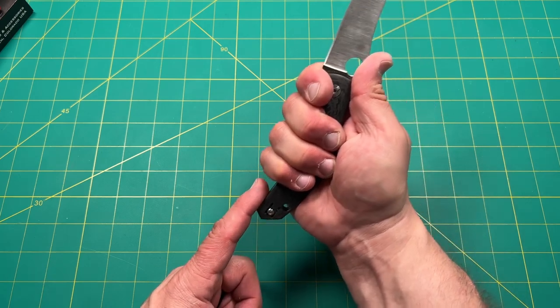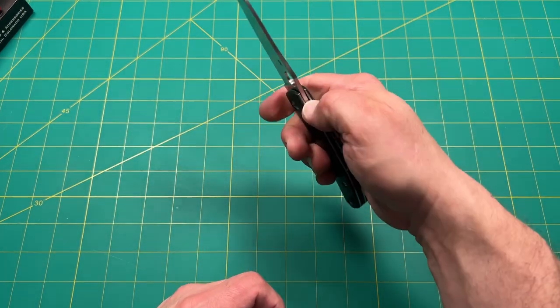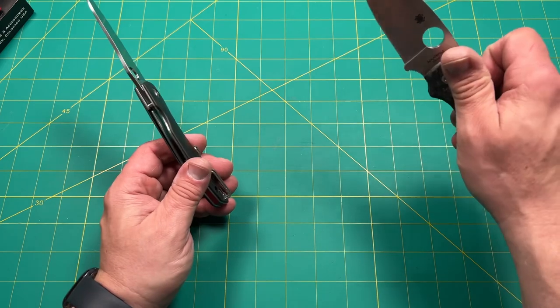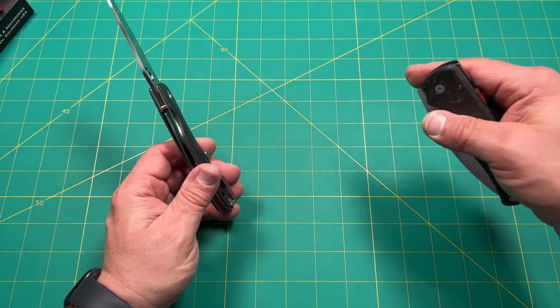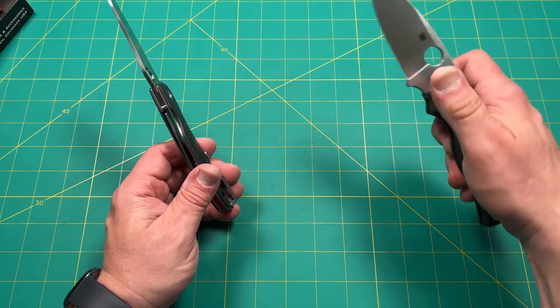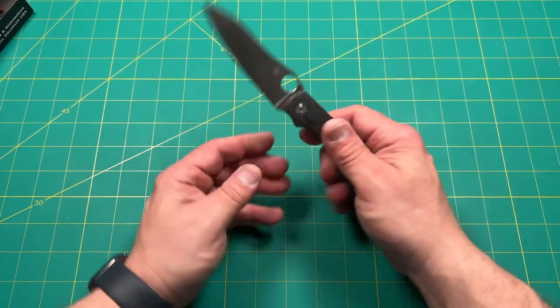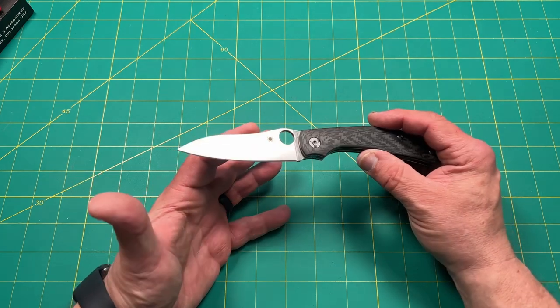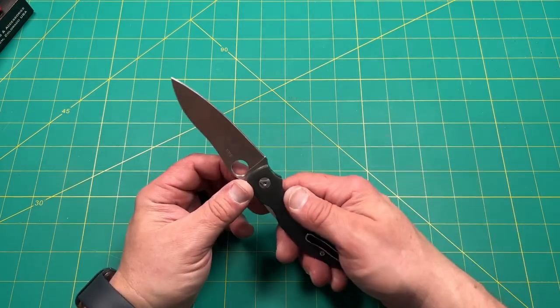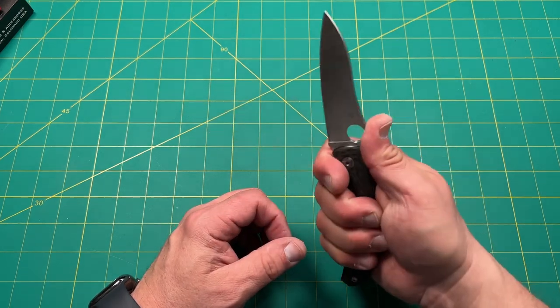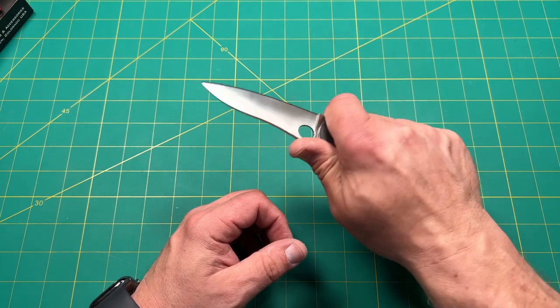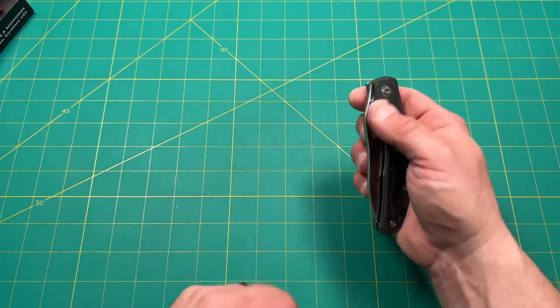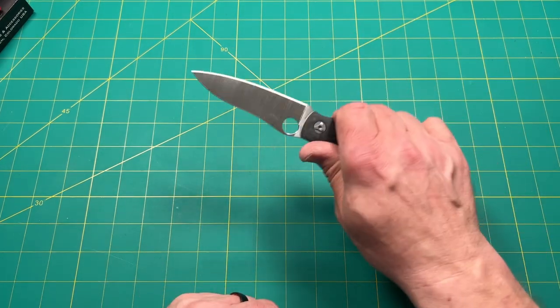Now there's no jimping like you traditionally have on Spydercos. Like on my smock, there's definitely the jimping. The Para 3 and the military, the Paramilitary 2 and the Para 3, they all have jimping there as well. But this just seems more like a gentleman's carry. It's very discreet. It seems small, not necessarily small, but thinner, lighter kind of carry, but yet very functional. You could really do some serious work with this knife. It has that very reserved kind of look, but yet it could break out and really do some hard work.